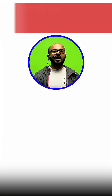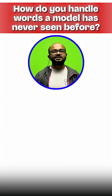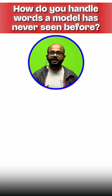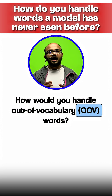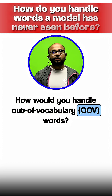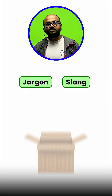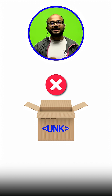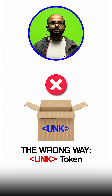How do you handle words your model has never seen before? In other words, how do you handle out-of-vocabulary words? Don't say you would just map them to an unknown token. That's old school and loses too much information.